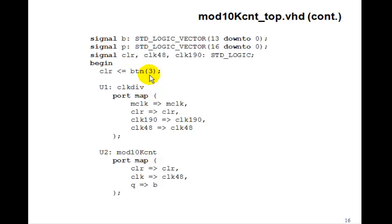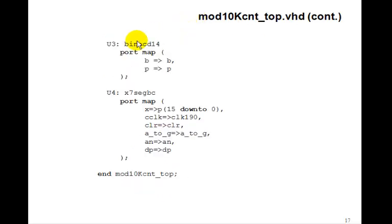Clear is just going to be button 3. We'll just wire up the clock div, setting clock 190 and clock 48 to the signals here. M clock is the input. We'll port map our mod 10k. Q goes to the signal B. Then we'll binary to BCD14. B is the input. P is the output. And then our x7-segBC. X is going to P15 down to zero. That's the 16 bits, which is going to display the 9999. And C clock is our low clock 190. So that's our 190 hertz clock.